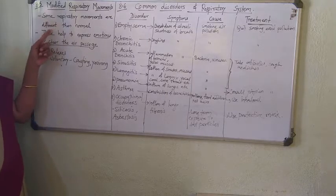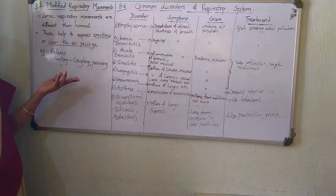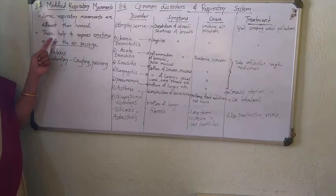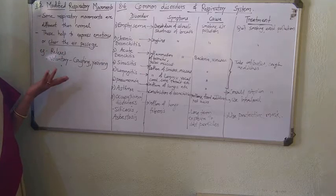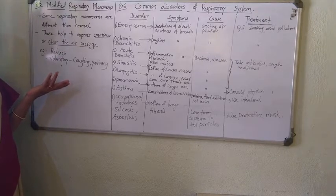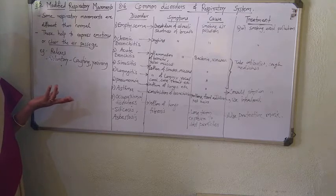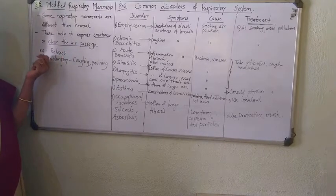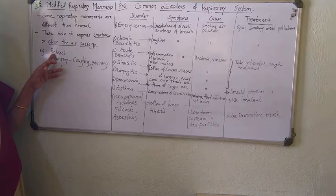Some respiratory movements are different from normal breathing — beyond the usual inspiration and expiration mechanism. These movements help to express emotions or clear the inner air passage. Emotions include feelings like complete wellness, laughing, or crying, during which water can pass out through tears. These are called modified respiratory movements and they include almost all reflexes.